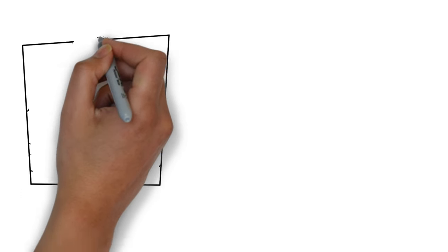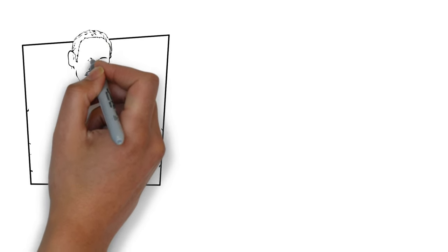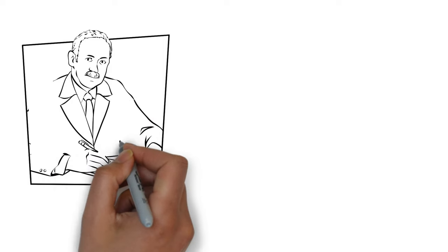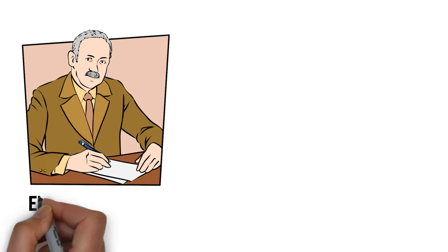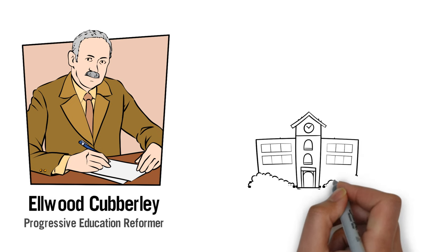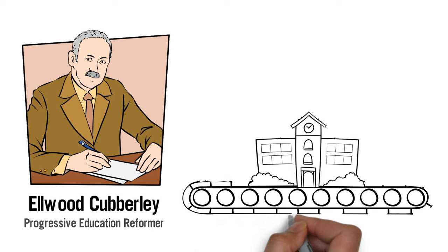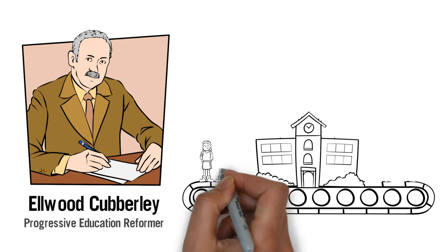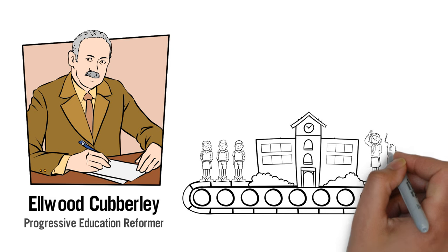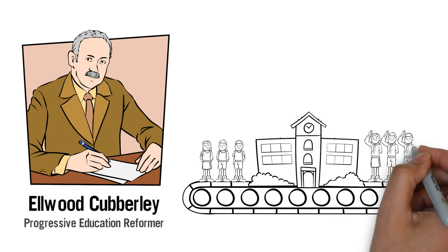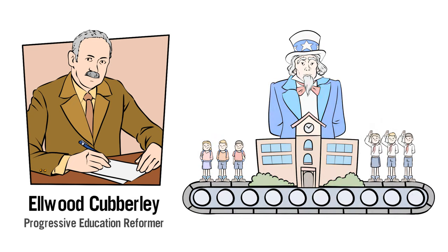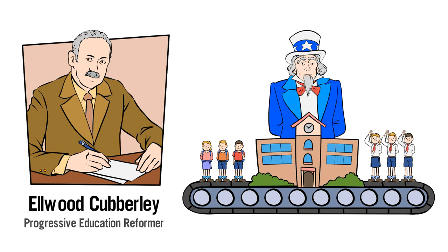Progressives, however, viewed children not as workers, but as commodities. In his 1916 treatise, Public School Administration, Elwood Patterson Cubberley described schools as factories in which the raw products, children, are to be shaped into products to meet the various demands of life. The specifications for manufacturing come from the demands of civilization, and it is the business of the school to build its pupils according to the specifications laid down.